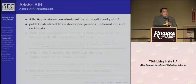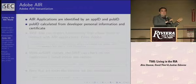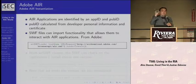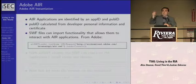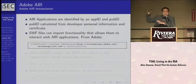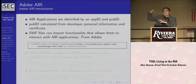AIR applications are identified by two things: an app ID and a publisher ID. The publisher ID is a long entropic-looking string calculated from the developer's certificate information and public key. The app ID is just a string decided by the developer. AIR applications can't be launched directly — you can't use an object tag or call them from JavaScript like an ActiveX control. You have to launch them from inside a Flash file. So to launch an AIR application, you load up a Flash file, and within it they pull down air.swf.